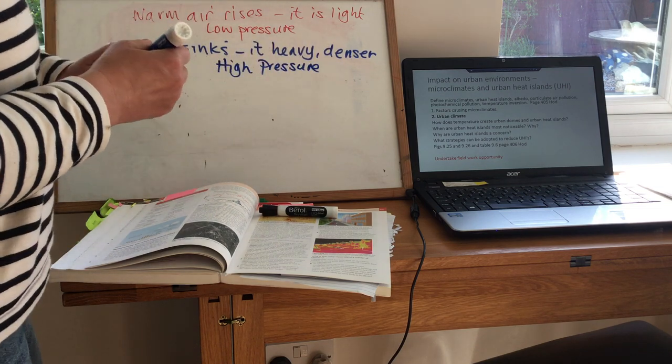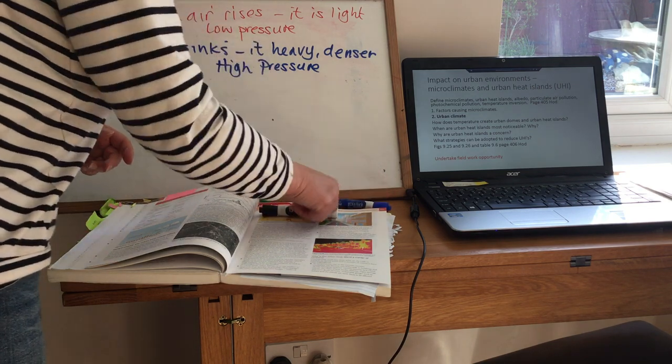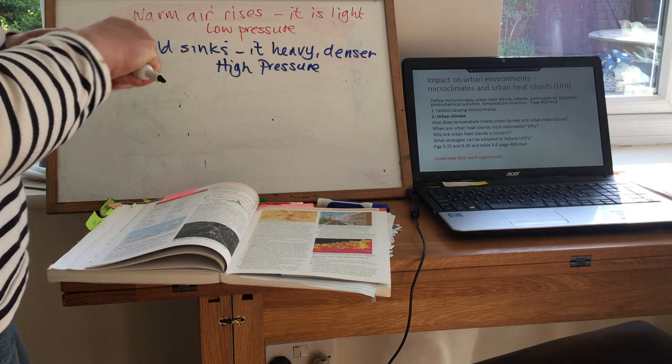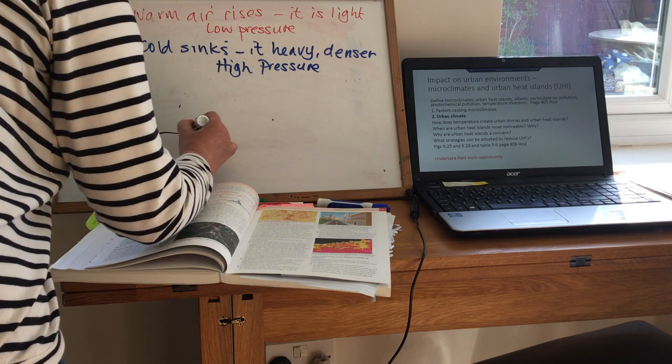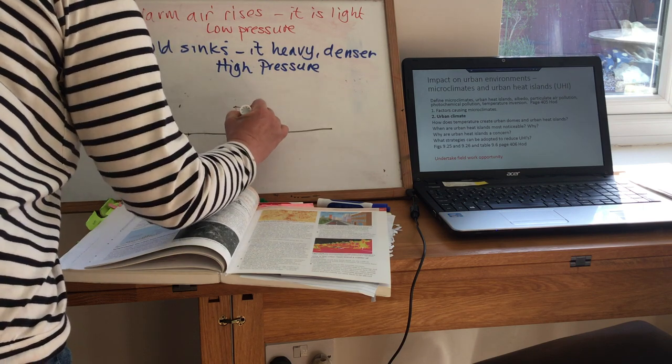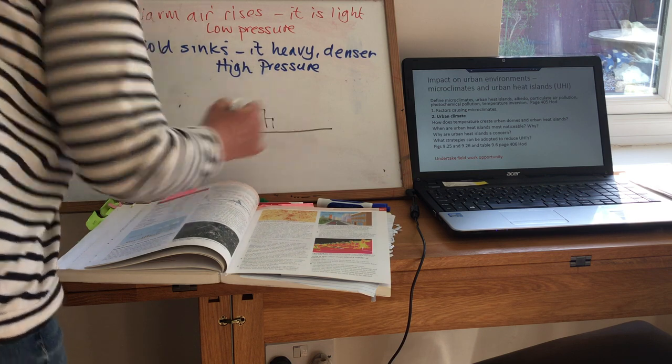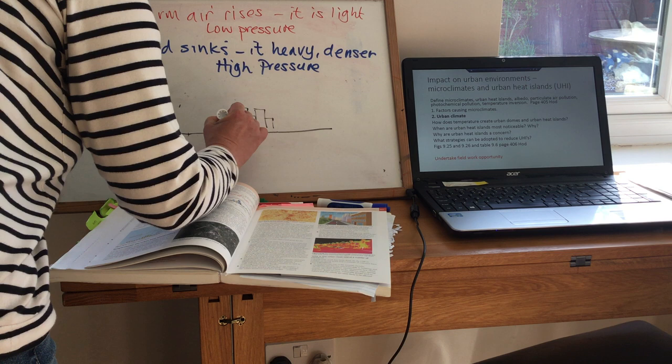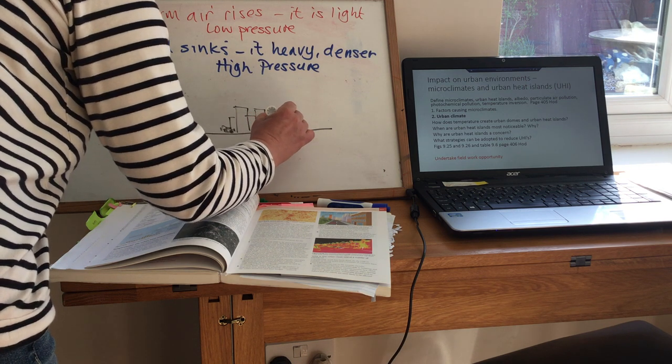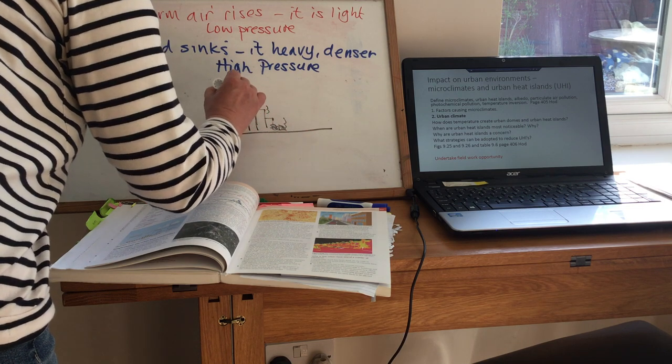Once you've understood those two principles, urban heat islands then become easy. So let's have a look now at a typical landscape. If you do a cross section of the city, you will have your CBD in your centre with high storey dense buildings and also a high degree of traffic. Quite quickly drawing a couple of cars. So these are all giving off heat.